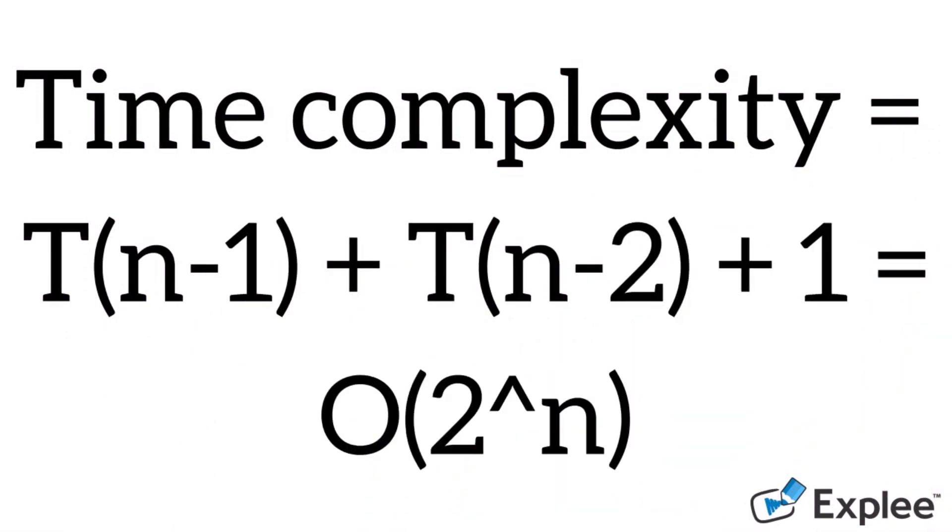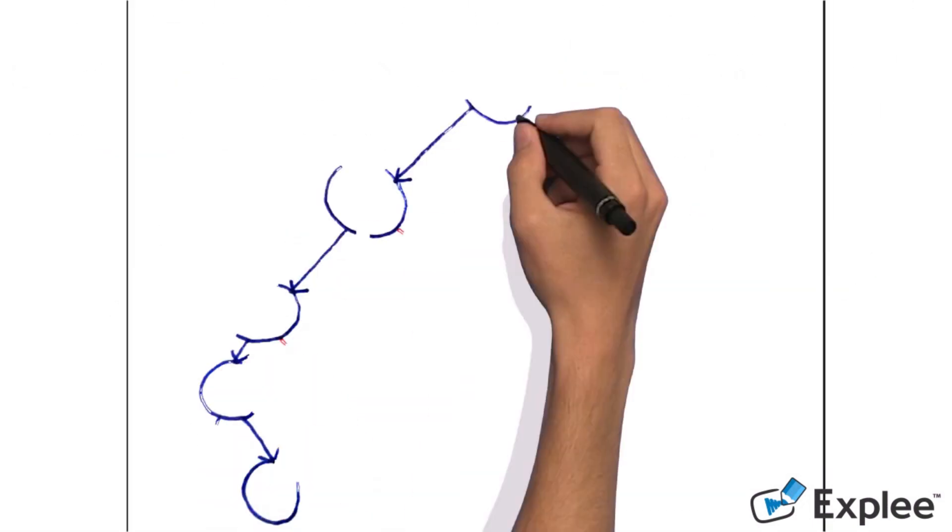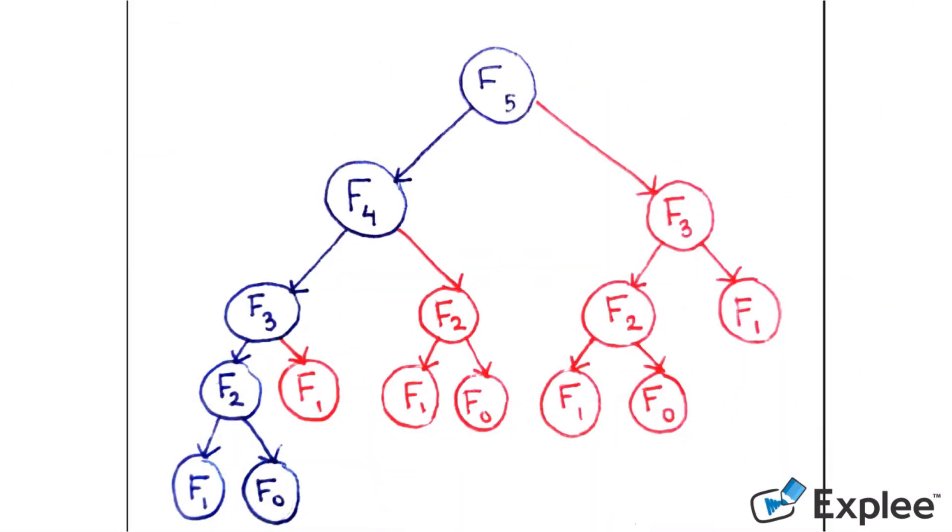Let's see how memoization will help here. Calling Fib5, from this picture we can see that Fib2 was calculated 2 times, Fib1 was calculated 4 times and so on.